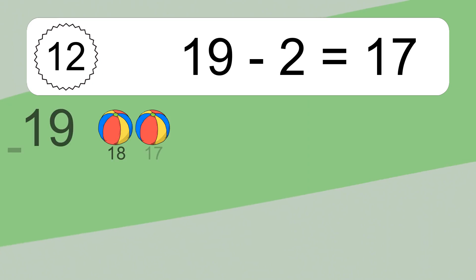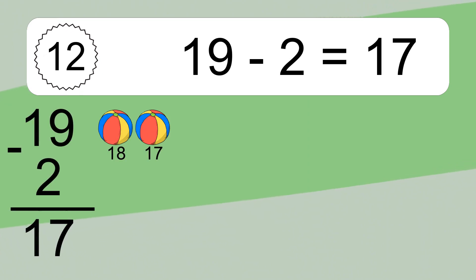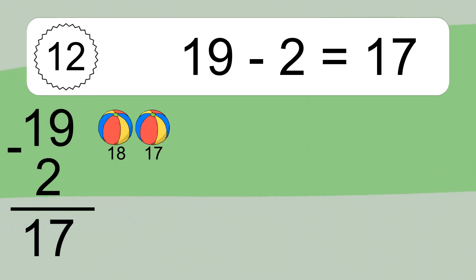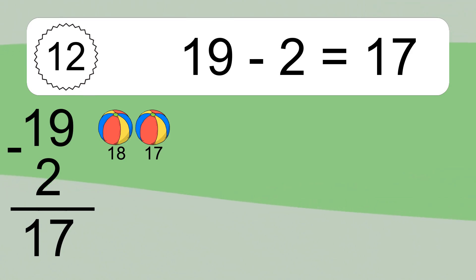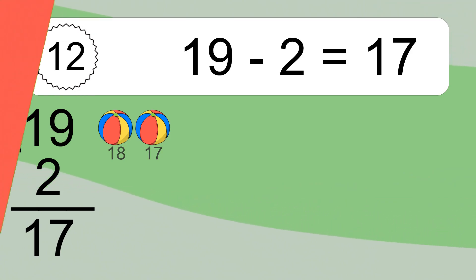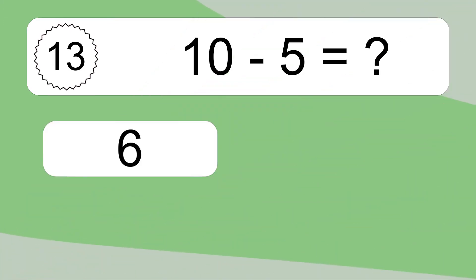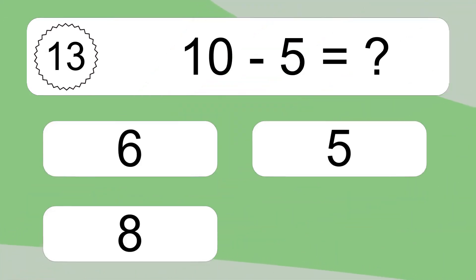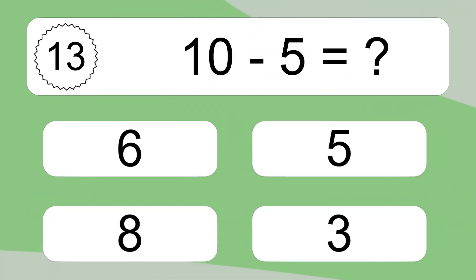19 minus 2 equals 17. Let's count it. 18, 17. 10 minus 5 equals what?